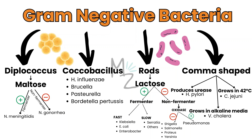Rods are further subdivided based on lactose fermentation. Bacteria that ferment lactose are either fast or slow fermenters. Fast fermenters include Klebsiella, E. coli, and Enterobacter; slow fermenters include Serratia and others. Non-lactose fermenters are subdivided based on the oxidase test: oxidase-positive is Pseudomonas, while oxidase-negative organisms include Shigella, Salmonella, Proteus, and Yersinia.